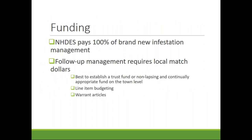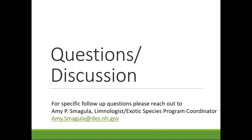When it comes to funding: if you have a new infestation, the state will pay 100% of management for the first year. Any follow-up actions are a cost match between local and state dollars. We recommend establishing a local trust fund — via a warrant article, town budget line item, or lake association special account — as a non-lapsing, continually appropriated fund so it's there when you need it. Many towns and lake associations across the state already allocate resources towards invasive species.